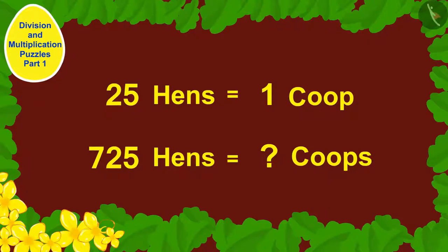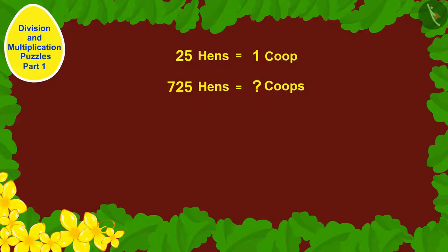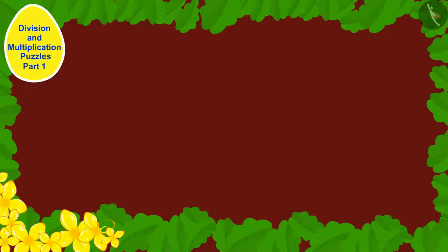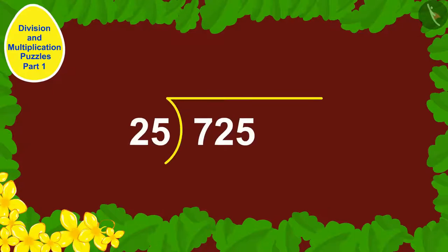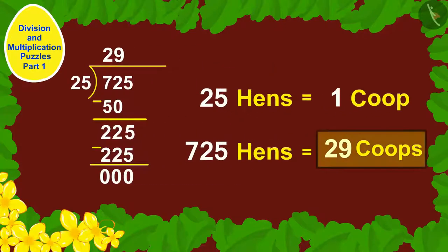If you wish to, you can pause the video and find the answer. We have to use the process of division to find a solution to this question. We can find the answer by dividing 725 by 25. Babban would have to build 29 coops to keep his 725 hens.